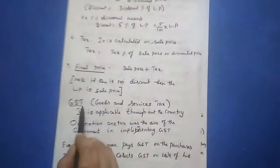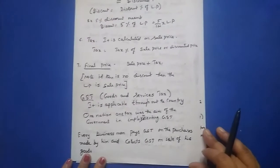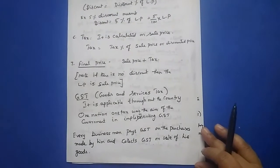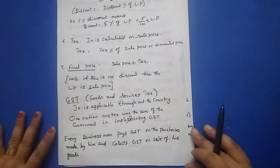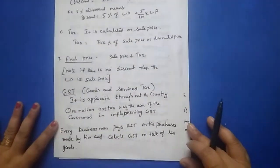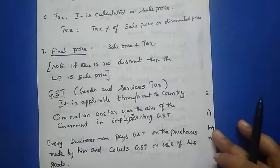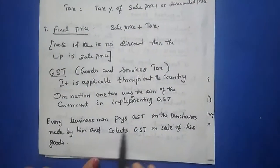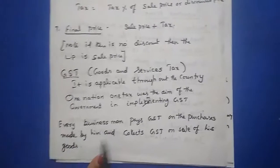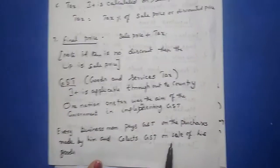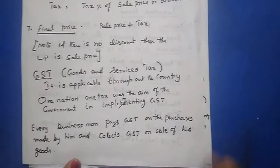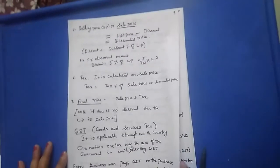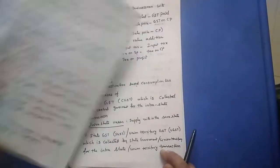Now, GST means Goods and Services Tax. It is applicable throughout the country. 'One nation, one tax' was the aim of the government in implementing GST, so the same percentage applies throughout the country. Every businessman pays GST on purchases made by him and collects GST on the sale of his goods. While purchasing, he pays the tax; while selling, he collects the tax from others.